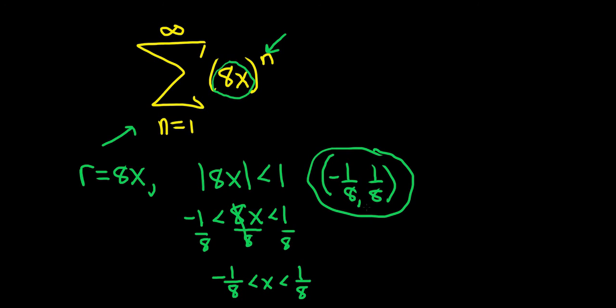Later on, we'll learn that this is called the interval of convergence. For now, we know that this series converges for values of x between negative 1/8 and 1/8.